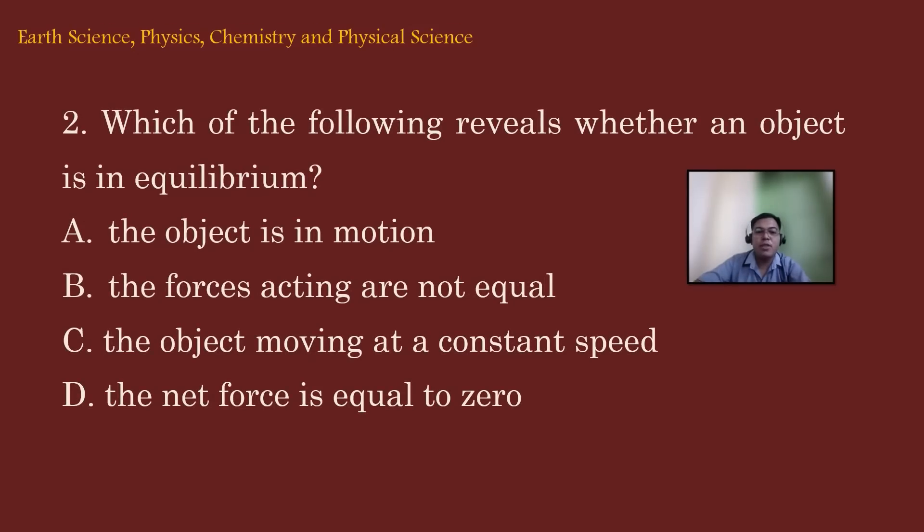Let's move on to item number 2. Which of the following reveals whether an object is in equilibrium? A. The object is in motion. B. The forces acting are not equal. C. The object moving at a constant speed. And D. The net force is equal to zero.